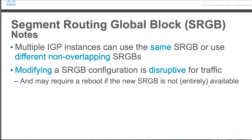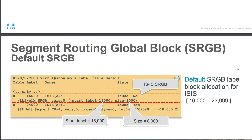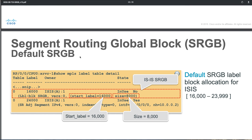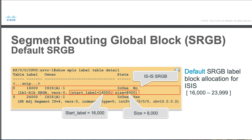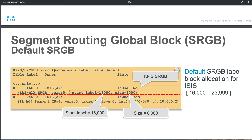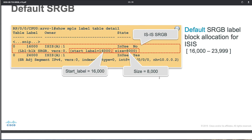Importantly, modifying an sRGB configuration is disruptive to traffic and may require a reboot if the new sRGB is not available. So once you have traffic running, be careful if you're trying to modify your sRGB block as you might cause disruption. Once labels are configured, you can verify using the command 'show MPLS label table detail' on a Cisco IOS XR device. This shows the sRGB starting at 16,000 with a size of 8,000, giving you the block from 16,000 to 23,999.